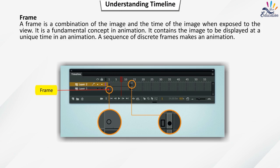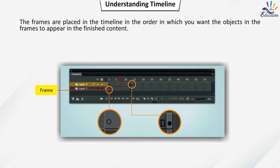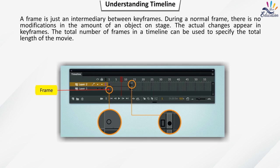A frame is a combination of the image and the time of the image when exposed to the view. It is a fundamental concept in animation and contains the image to be displayed at a unique time. A sequence of discrete frames makes an animation. The frames are placed in the timeline in the order you want objects to appear in the finished content. A frame is an intermediary between keyframes; during a normal frame, there are no modifications to objects on stage.